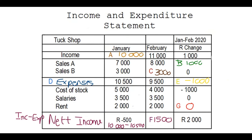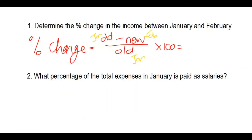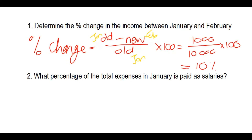The amount of change between January and February was 1,000 rand, and the January income was 10,000 rand. Using the formula: old minus new gives us 1,000 rand, divided by the January income of 10,000, multiplied by 100. When you calculate that, you get 10%.